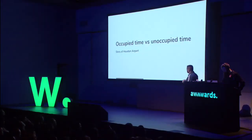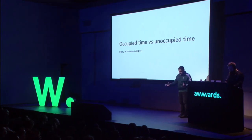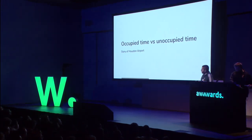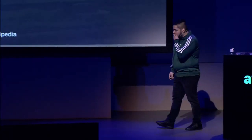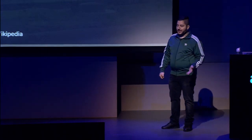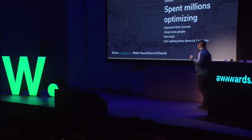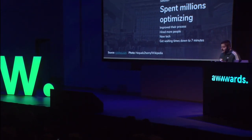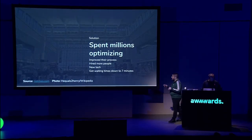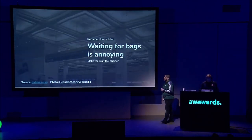If there's anything you remember in this talk, it's this story. It's a story of occupied and unoccupied time, and it's pretty much the summary of the entire talk. Houston Airport had this really big problem — passengers would complain about the time it would take for suitcases to arrive in the terminal building when the plane had landed. So Houston started investing millions into solving this pain point. They improved the process, hired more people, got new tech, and got the time down to seven minutes, which is really impressive. Plane lands, seven minutes later, suitcases arrive.